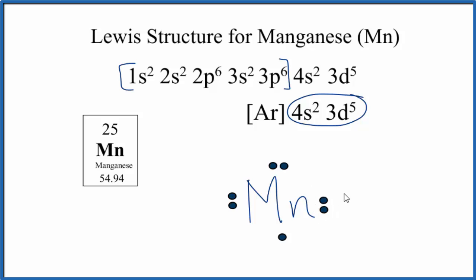But either way, if you're asked how to write the Lewis structure, this is a good way to do it. You look at this noble gas core and the valence electrons outside, so you can defend your answer if you're asked why you put 7 valence electrons around manganese. This is Dr. B with the Lewis structure for manganese, Mn, thanks for watching.